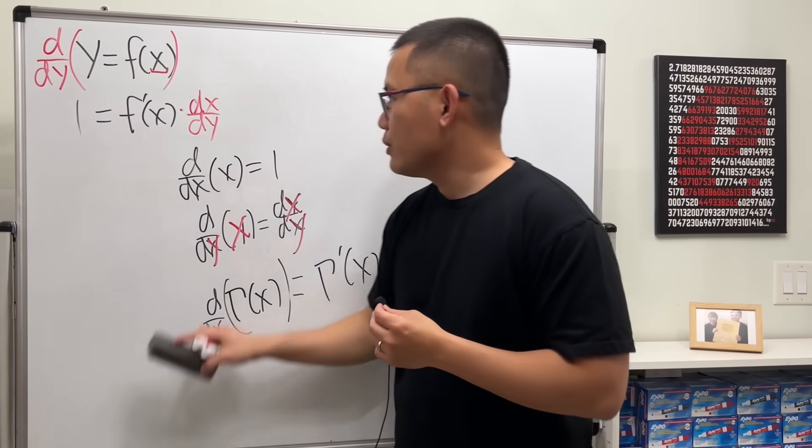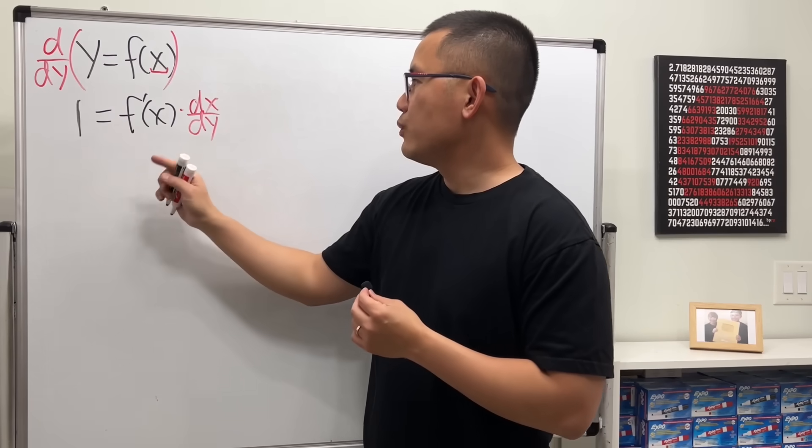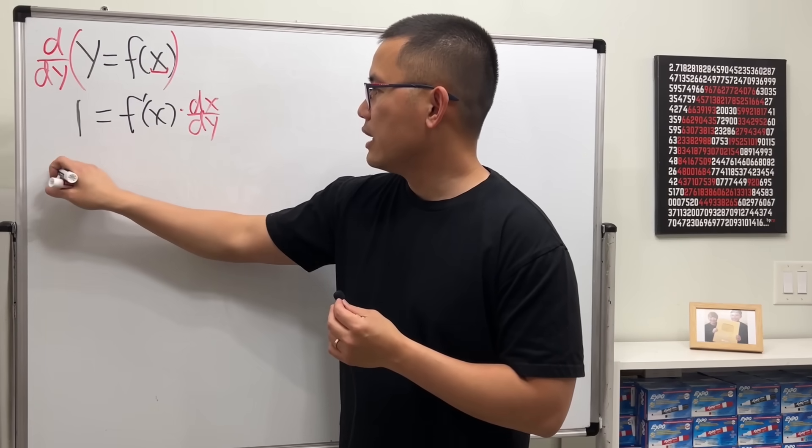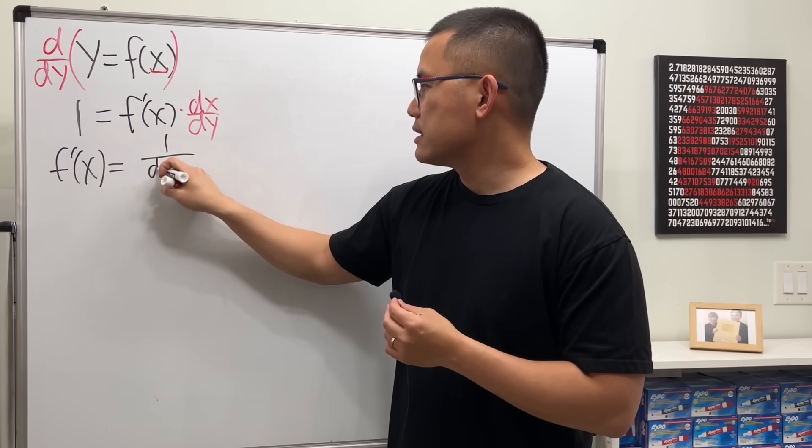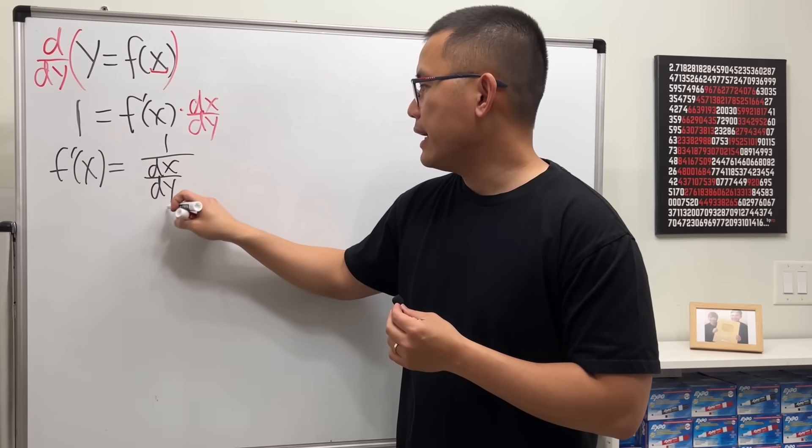Okay, so not so bad, huh? And we can just divide this on both sides, so we get f prime of x equals 1 over dx/dy. Cool.